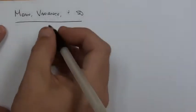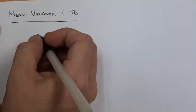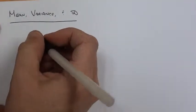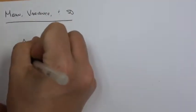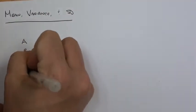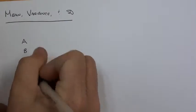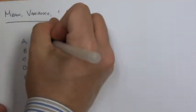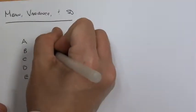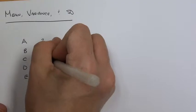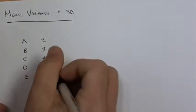Let's say that we start with a set of scores for five students. We'll give those participants A, B, C, D, and E. And then let's say that their scores on a particular assessment are 2, 3, 4, 2, and 1.